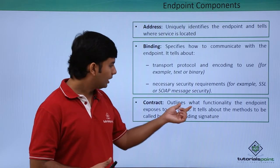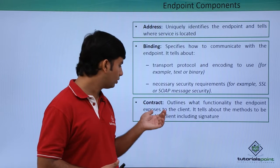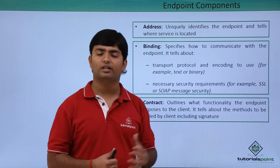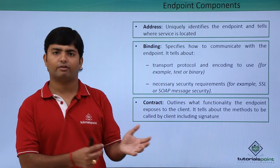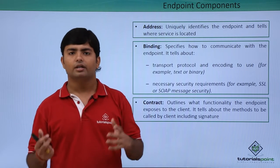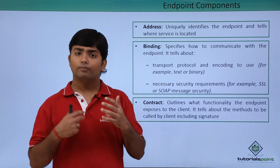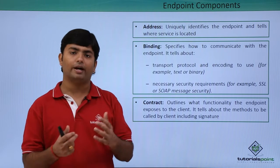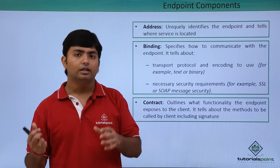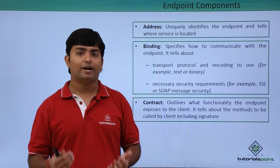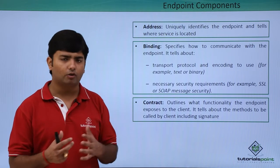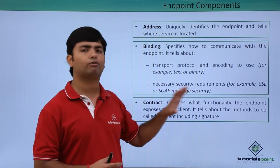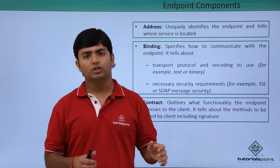The contract tells about the methods to be called by a client, including the signature. Whenever we create a method in C#, it has a signature — that signature will be described by the service contract, and the method will be defined by the operation contract. These contracts tell a particular service what all things we need to expose to the client.